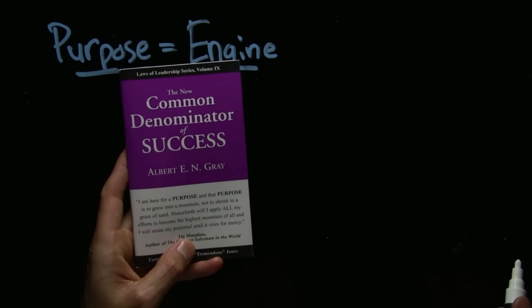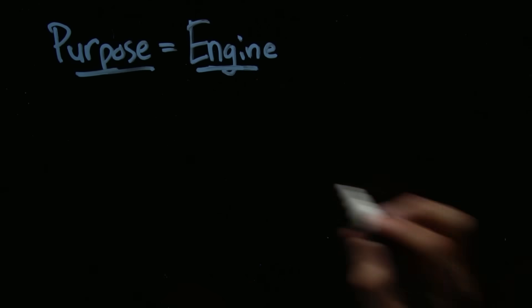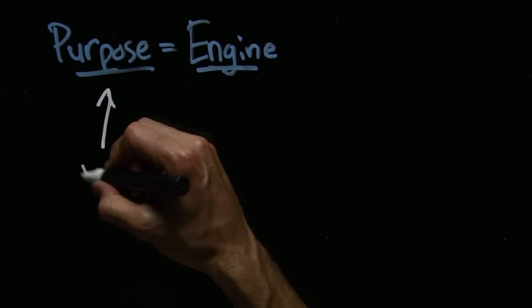It's inspired by the common denominator of success. In the last micro class, we talked about the definition of the common denominator of success, which is successful people make a habit of doing the things that failures don't like to do. They're not driven by their feelings or driven by compelling results. How do they get that? Fire via their purpose.